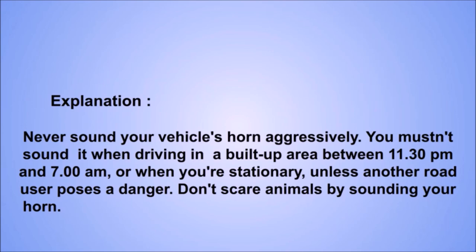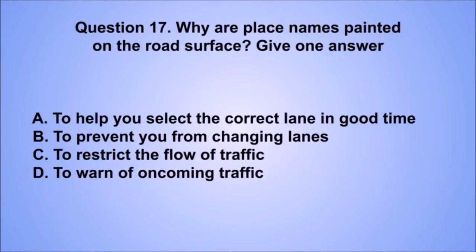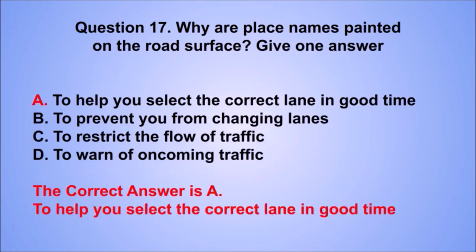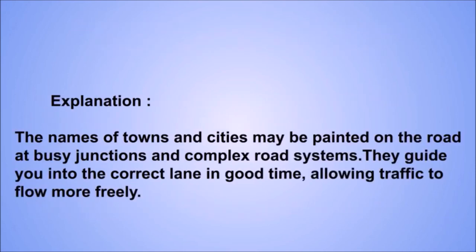Question 17. Why are place names painted on the road surface? The correct answer is A: To help you select the correct lane in good time. The names of towns and cities may be painted on the road at busy junctions and complex road systems, guiding you into the correct lane in good time and allowing traffic to flow more freely.